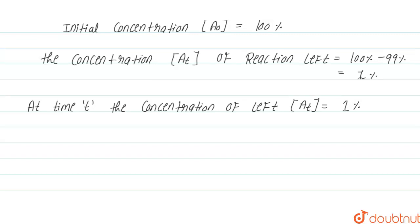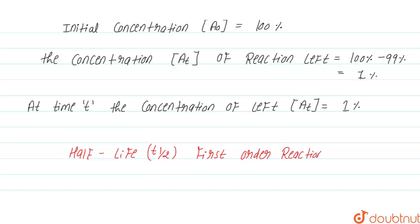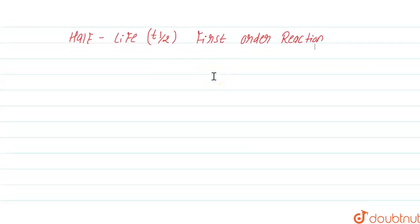We know that the half-life of a first order reaction is given by the formula: T-half equals 0.693 divided by K, where K is the rate constant. So we can calculate K: K equals 0.693 divided by T-half.